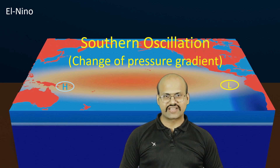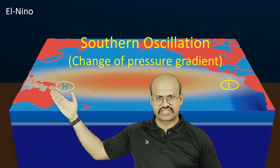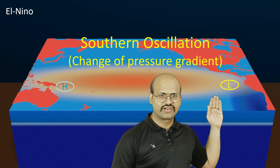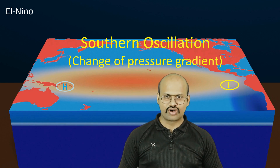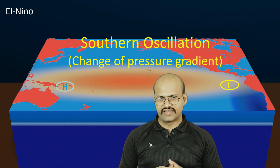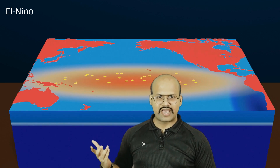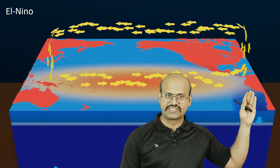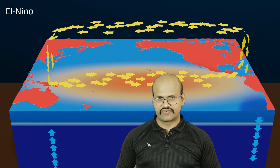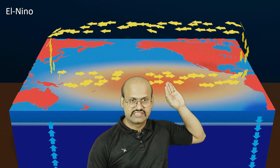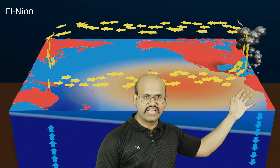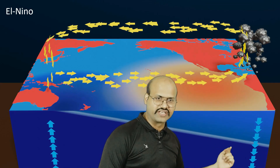With the reversal of the pressure gradient, the warm waters confined near Australia start moving towards the central South Pacific Ocean. The cooler waters also move back towards the South American coastline as the dragging force of the Walker Cell ends. A new wind current flows from the high pressure region near Australia towards the low pressure region near South America, dragging warmer waters towards the South American continent. This causes water accumulation near South America, pushing some water into the deeper parts and changing the thermocline profile.